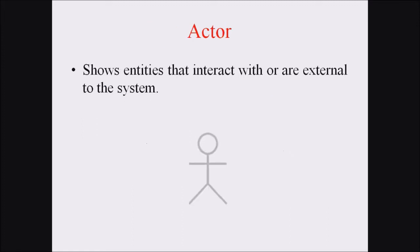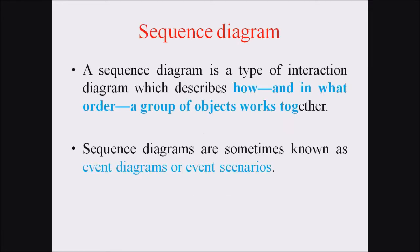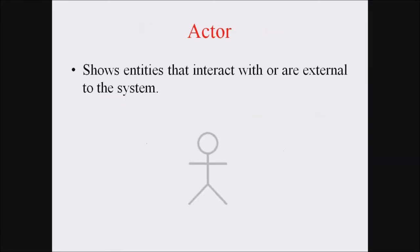The different symbols used in a sequence diagram — the first one is the actor. The actor shows the entities that interact with or are external to the system. It is represented by an actor symbol.